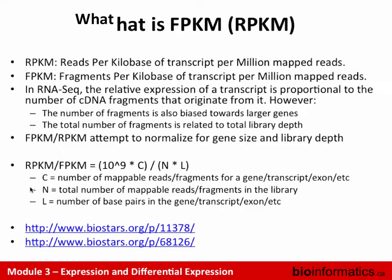We have to be aware that the number of fragments is biased towards larger genes — if you're randomly sampling and take a larger gene and break it into pieces, you're going to get more reads just because it has a bigger space. We don't necessarily want that to be reflected as a higher expression level. Also, the total number of fragments is related to library depth, so the more you sequence, the more your fragment counts go up, but that's not really reflecting any change in the underlying expression level. FPKM and RPKM simultaneously normalize for gene size and library depth, giving you an apples-to-apples comparison between genes and between samples.